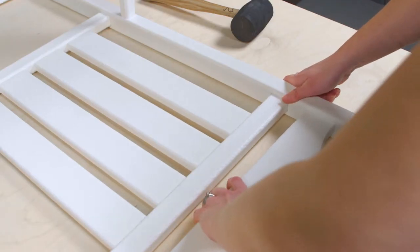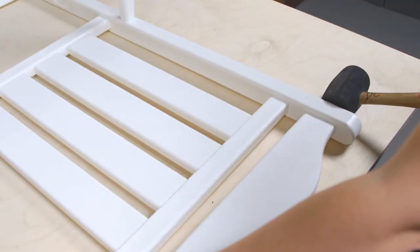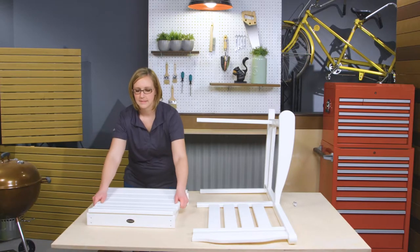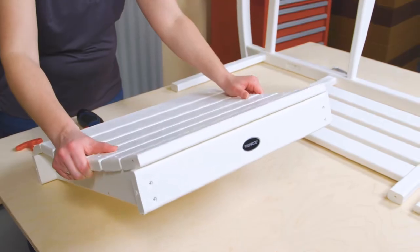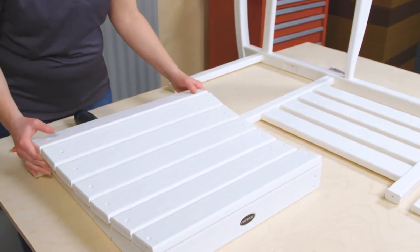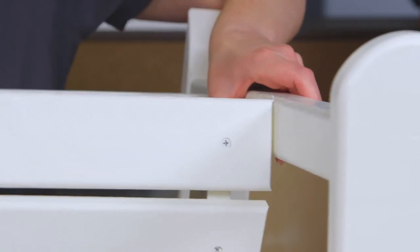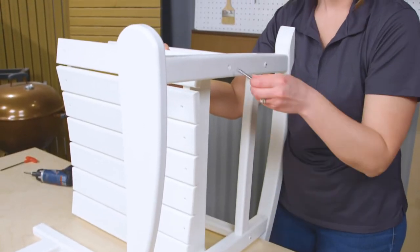Fit the headrest into the pre-made pocket in the top of the right side frame as shown. Next, fit the seat into the pre-made pockets in the right side frame. Please note that the Polywood medallion will be oriented toward the back of the rocker. Secure with two 2.5-inch screws.